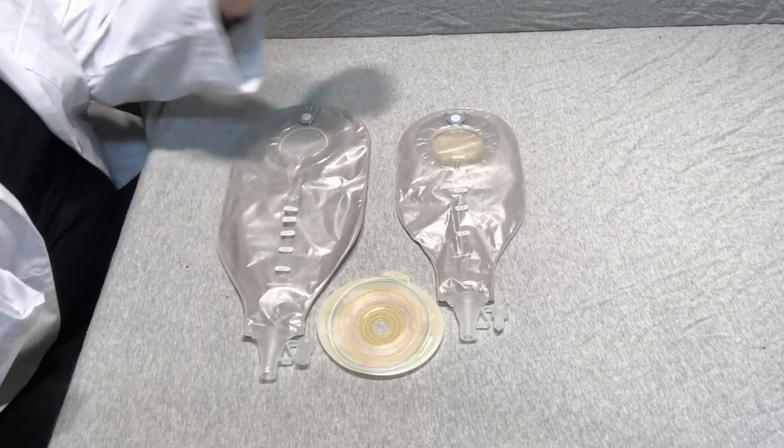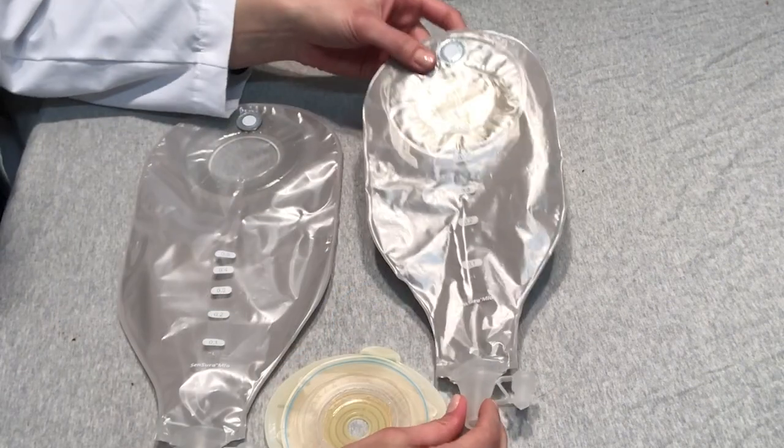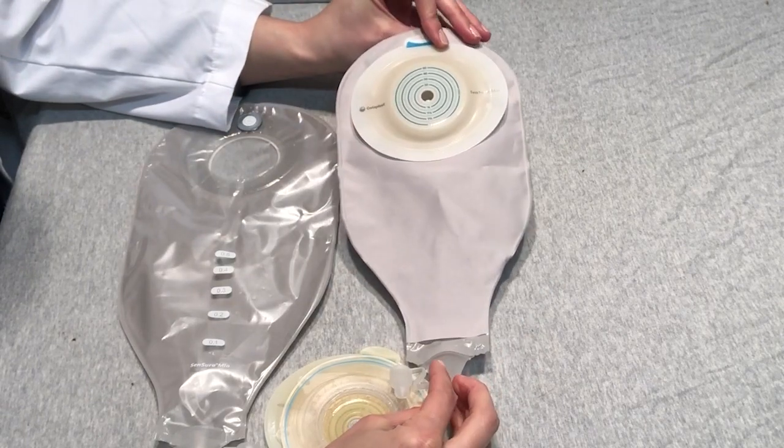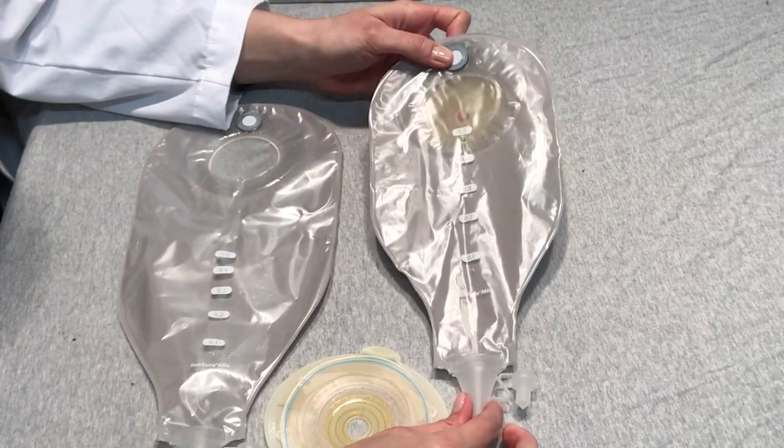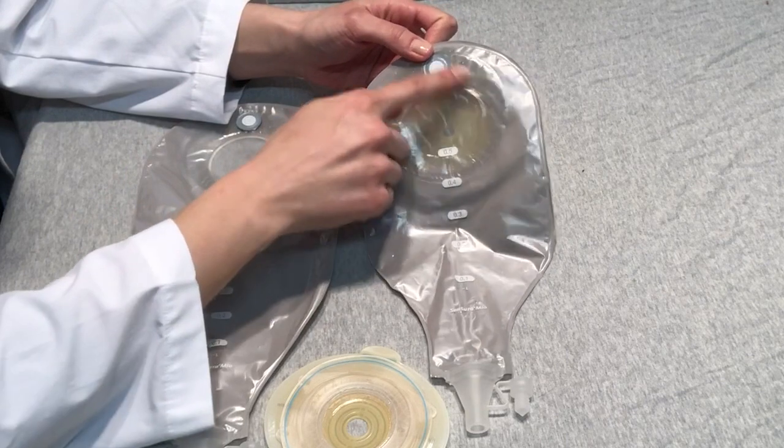So I'm going to go over the features of each one. The first one again we have our one-piece convex pouch here that's high output. We have the filter here.